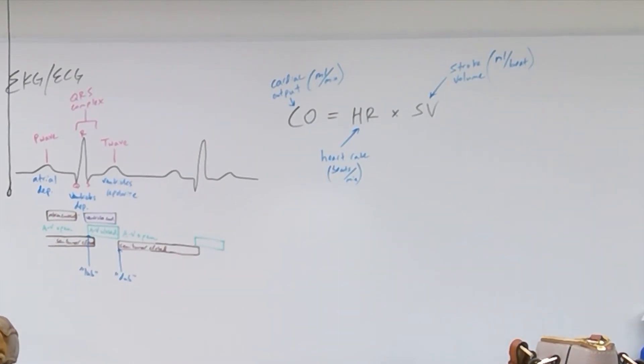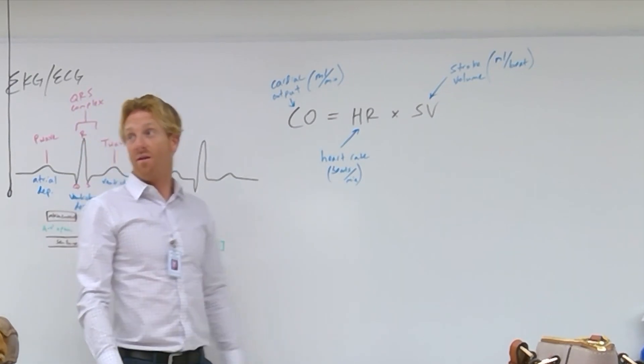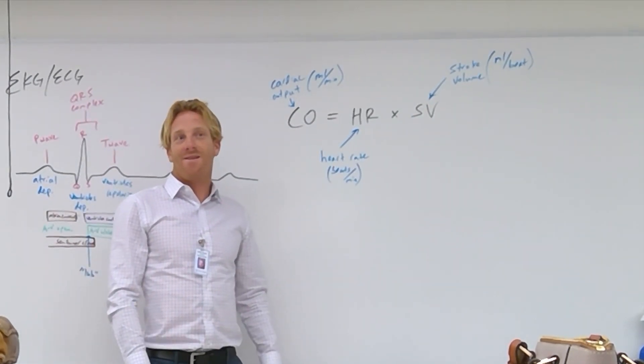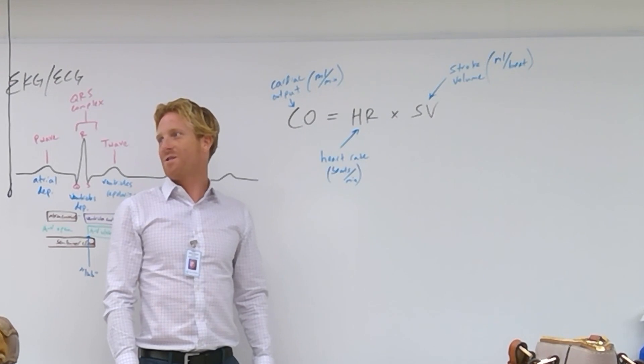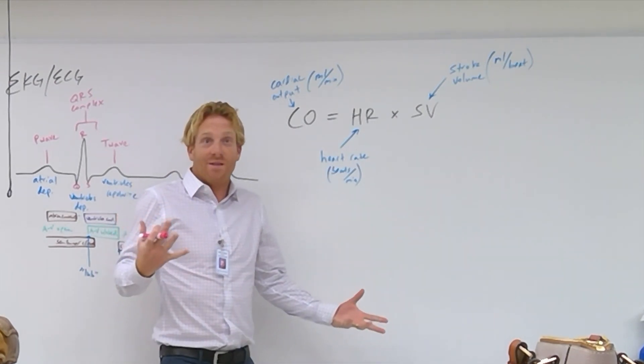We know that we can change heart rate with sympathetic and parasympathetic activity. So we can modulate that up or down based on the needs of the body. Can we change stroke volume? That's how much blood is pumped with each beat. Can we change that? We can change that. We can change how much blood is pumped with each beat.